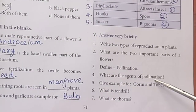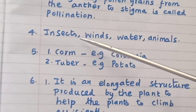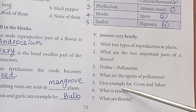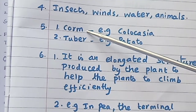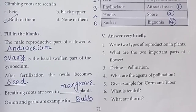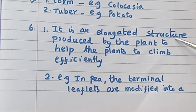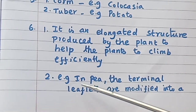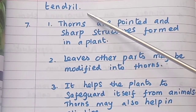What are the agents of pollination? Insects, wind, water, and animals. Give examples for corm and tuber. Corm — Colocasia. Tuber — Potato. What is a tendril? It is an elongated structure produced by the plant to help it climb efficiently. In pea (Pisum), the terminal leaflets are modified into tendrils.